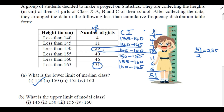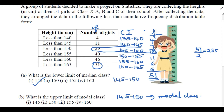The next question asks for the upper limit of the modal class. The modal class is the class interval having the maximum frequency. Looking at the frequency column, the maximum frequency is 18, and the corresponding class interval is 145–150. So 145–150 is our modal class.